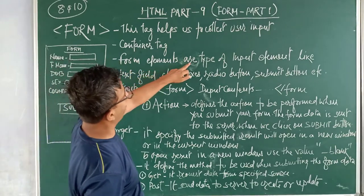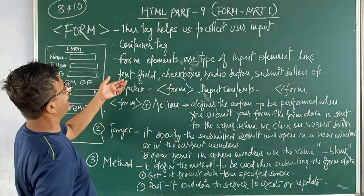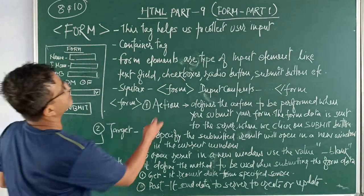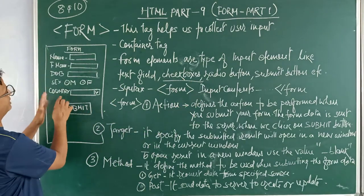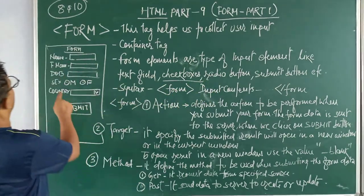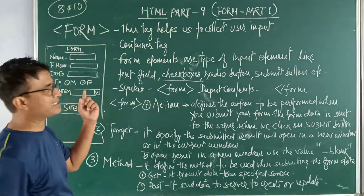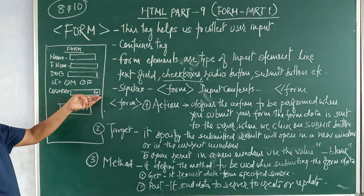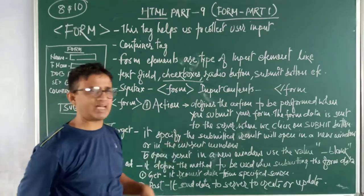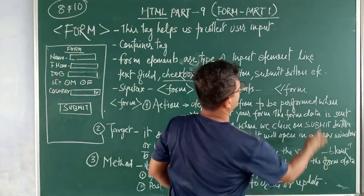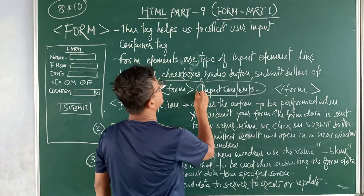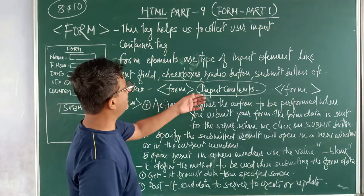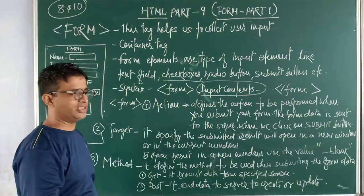Third one, form elements are type of input element, like text field. You have seen here, this is a text field where we enter our name. These all three are text field. Then checkboxes. Checkboxes I am not showing here but I will tell you. Then radio buttons. Radio buttons like this, these buttons you have to press here. Then submit button is here. And this is dropdown box you can see. What are the syntax for the form tag? This is the opening form and this is the closing form. In between you put all the input elements, your text field, your checkboxes, your radio button, your submit button.